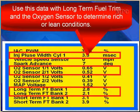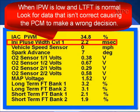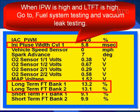Try to determine if this engine is running consistently rich or consistently lean. When the injector pulse width is high and long-term fuel trim is normal, look for data that isn't correct causing the PCM to make a wrong decision — the computer is adding fuel but long-term fuel trim is normal, so look for something confusing the PCM and look at its inputs. When injector pulse width is low and long-term fuel trim is normal, similarly look for incorrect data causing the PCM to make a wrong decision. When injector pulse width is high and long-term fuel trim is high, go to fuel system testing and vacuum leak testing — injector pulse width is higher than normal and the computer is calling for it, so go see why the fuel system isn't delivering enough fuel or if a vacuum leak is giving too much air.